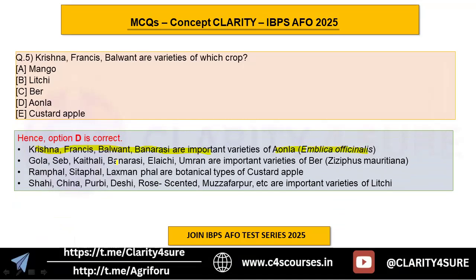Gola, Seb, Kaithali, Banarsi, Ilaichi, and Umran are important varieties of ber, that is Ziziphus mauritiana. Ramfal, Sitafal, and Laxmanfal are botanical types of custard apple. Shahi, China, Purbi, Desi, Rose Scented, Muzaffarpur, and Seedless are varieties of lychee, Litchi chinensis. From one question you learn the most important varieties of four crops.